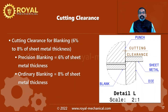Generally, the cutting clearance will be in the range of 6% to 8% of the sheet metal thickness. For precision blanking, we provide a cutting clearance of 6% of the sheet metal thickness. For ordinary blanking, we provide 8% of the sheet metal thickness. Many engineers who are already working as press tool designers usually ask me — the companies in which they work have different cutting clearance standards. Which one to follow? I suggest you always follow the company standards.